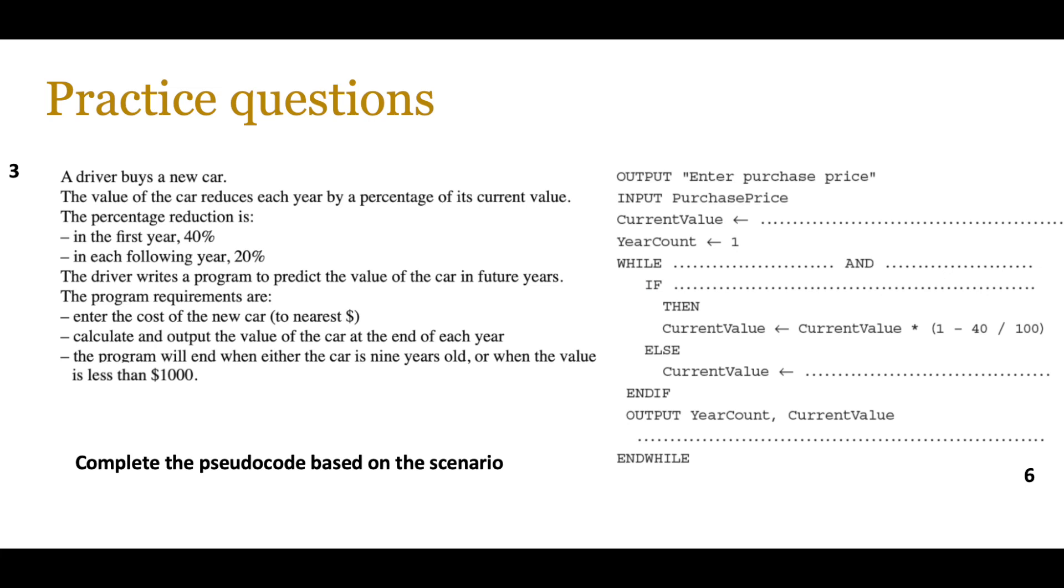Another type of question that will come up is incomplete pseudocode, or maybe you're given a context and you need to write the pseudocode. So in this case, a driver buys a new car, the value of the car reduces each year by a percentage of the current value. You're kind of working out some kind of compound depreciation. You're given partial pseudocode and you need to complete it. So again, these type of questions are very easy to do if you have practice, but if you don't have practice and you haven't coded or understood pseudocode, these can be a bit tricky. So perhaps pause the video and go through these set of questions and share your answers with me.